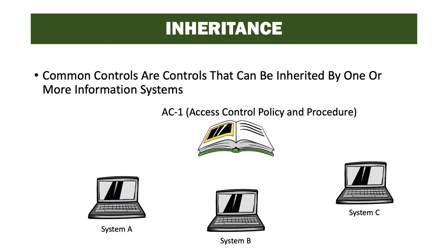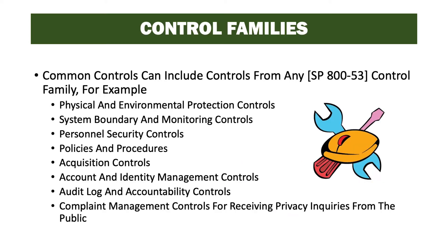Common controls are controls that can be inherited by one or more information systems. In this example, we see AC1, which is the access control policy and procedure, can be inherited by system A, system B, and system C. This alleviates the task of each of those systems creating their own access control policy and procedure. The access control policy and procedure can be centralized in the organization, and every system that needs this control can inherit it from that one source, referred to as the common control provider. This eliminates the need for the system owners from creating, implementing, having assessed, and tracking the control.